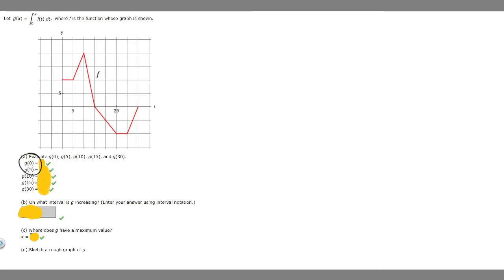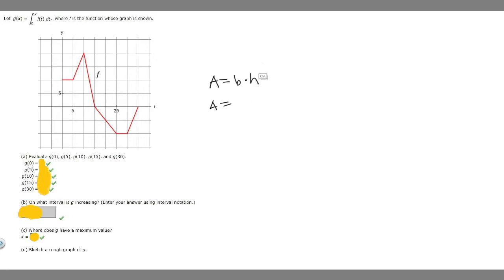Let's start with g of 0. We know that area equals base times height. If we start at 0 and go to 0, our base isn't going to change — our base will just be 0. So no matter what our height is, if our base is 0, our area is going to be 0. So g of 0 is just going to be 0.